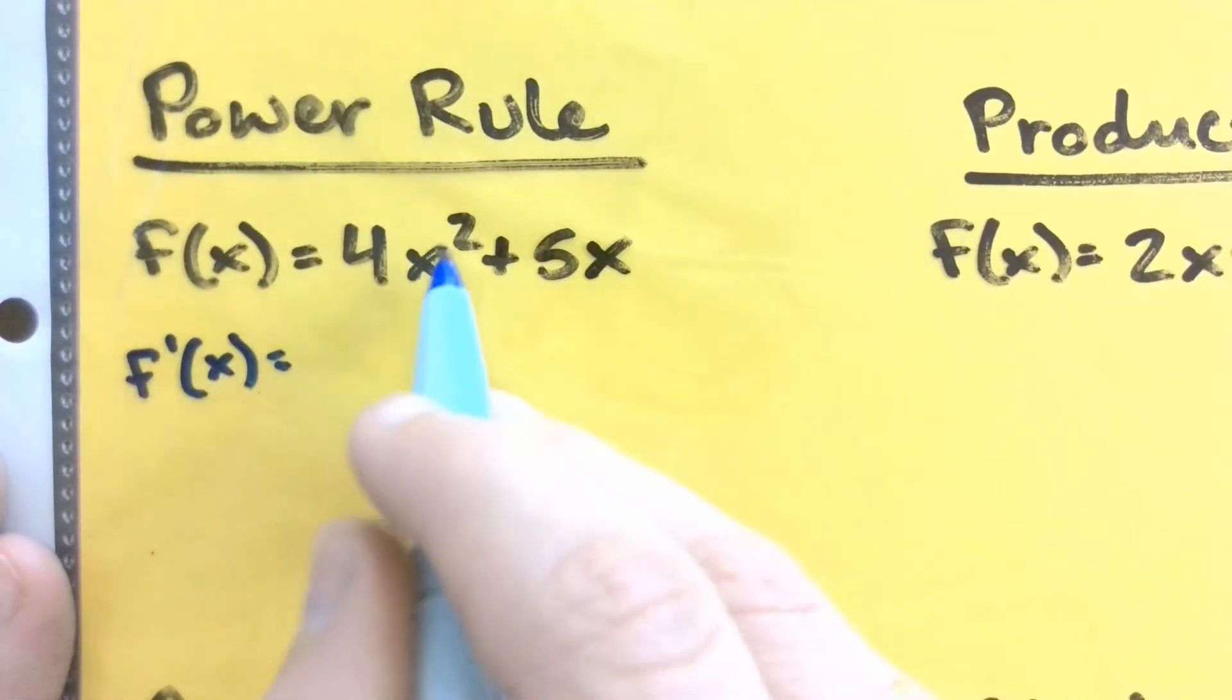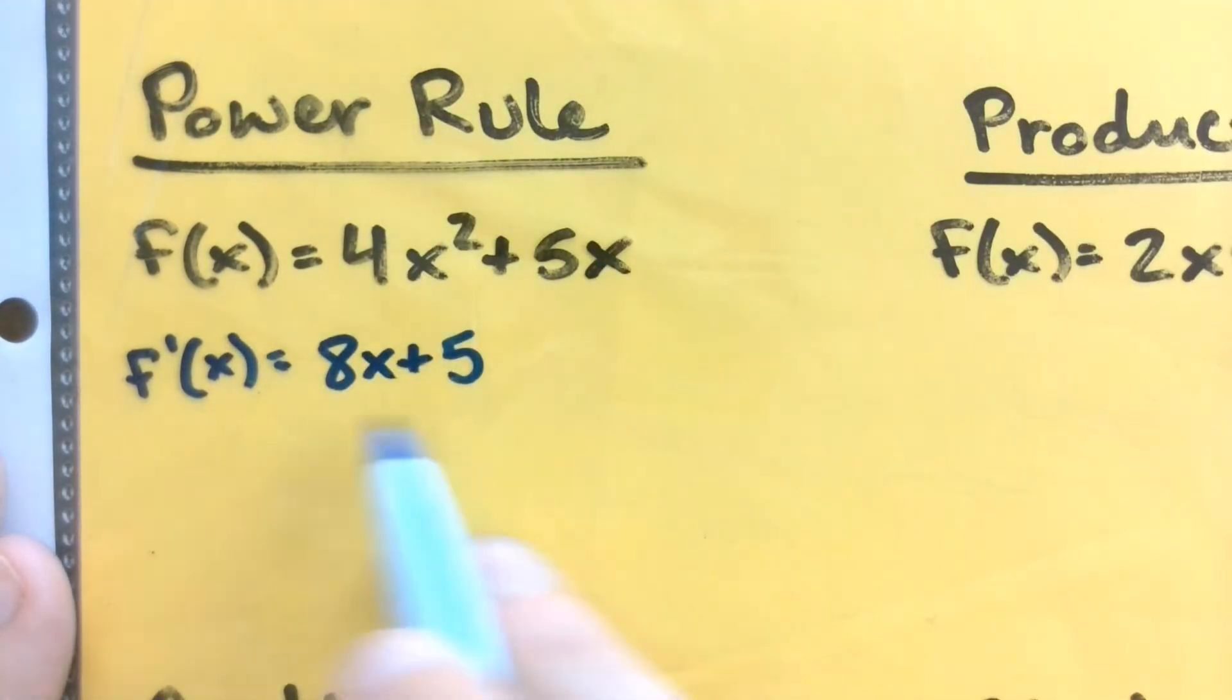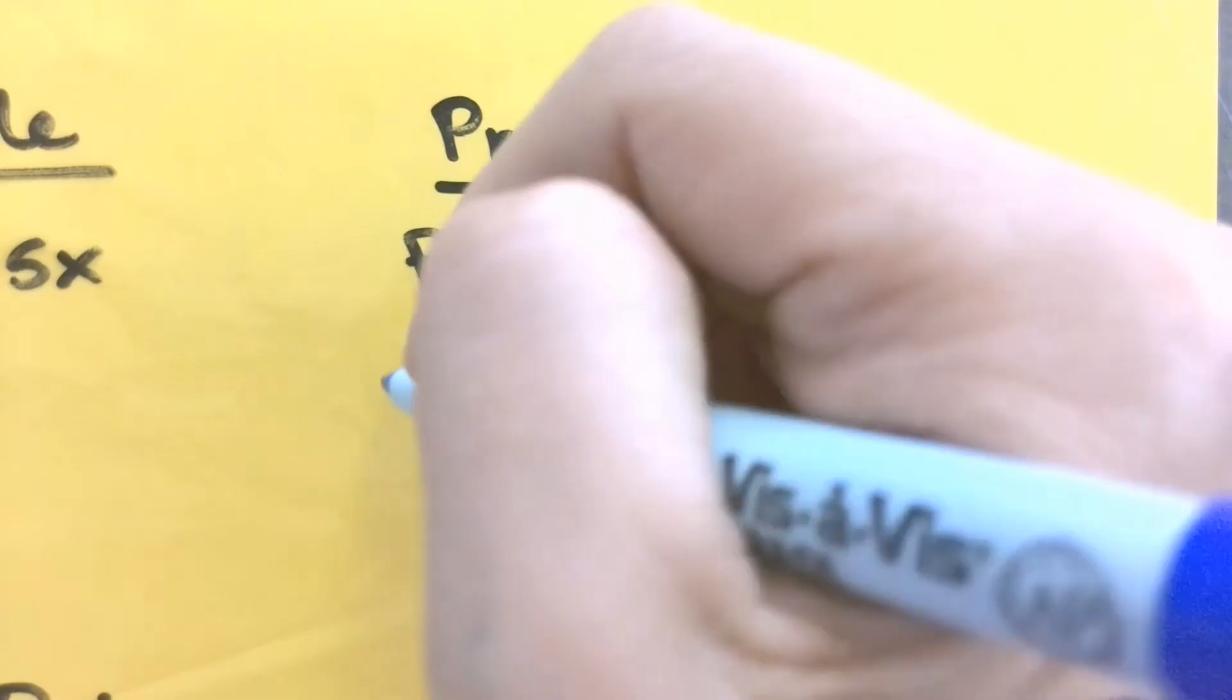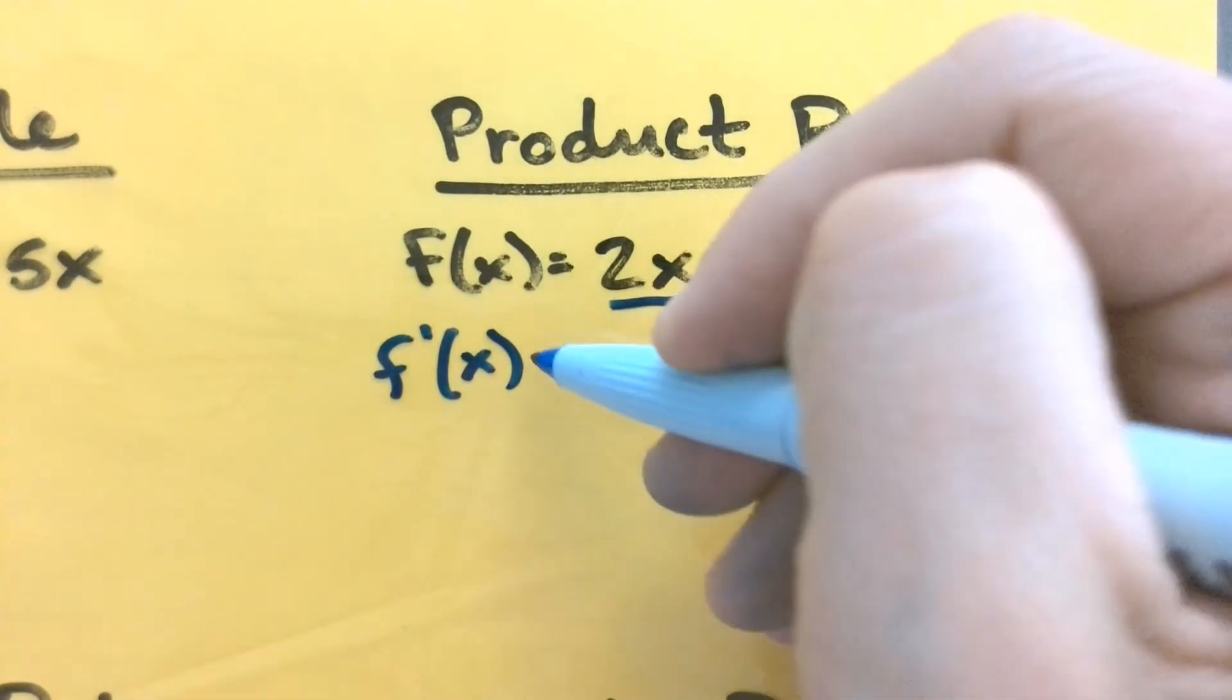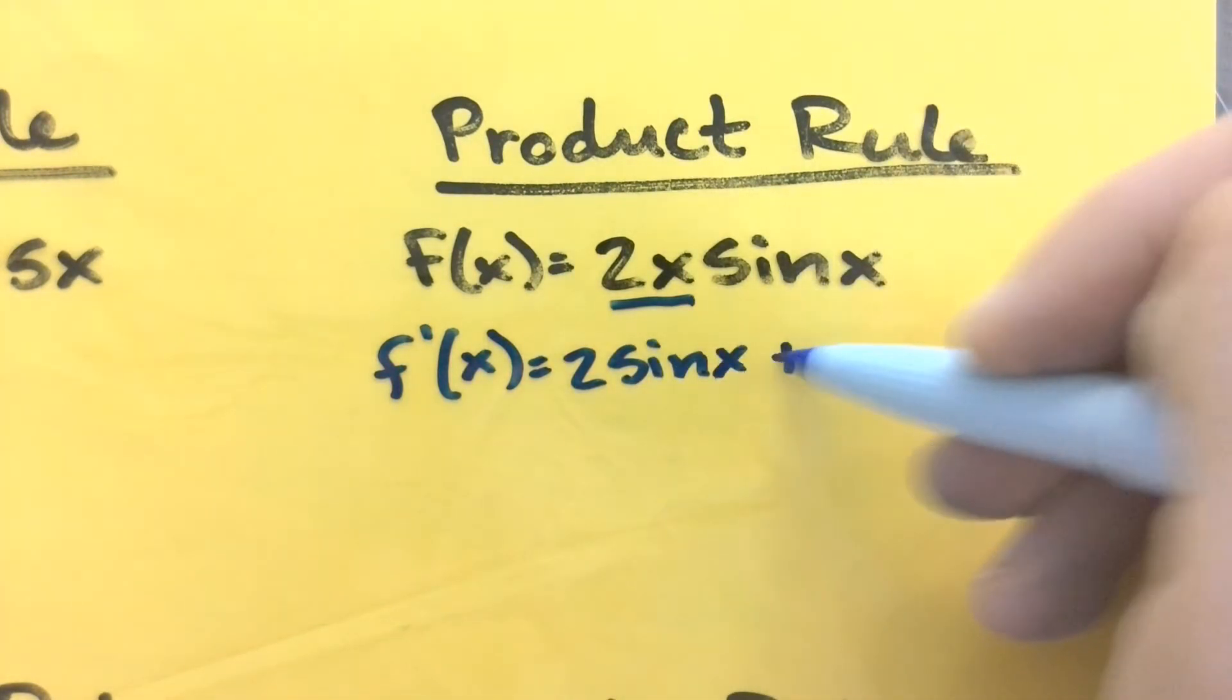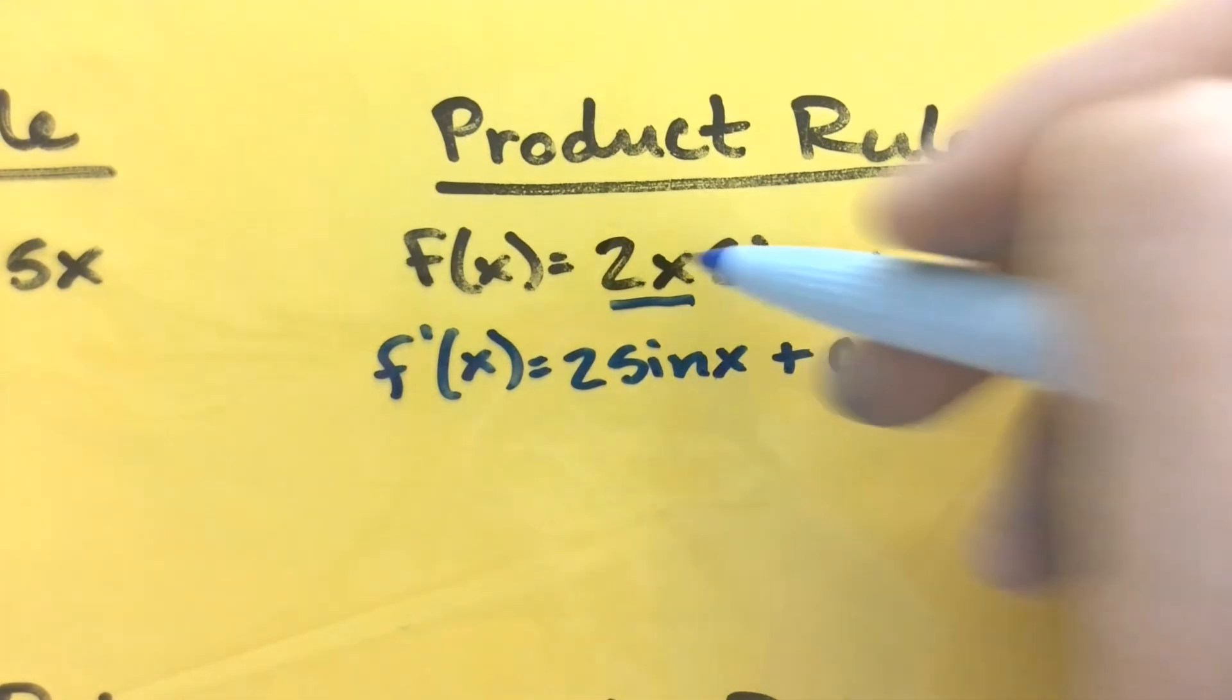So our power rule for finding derivative, multiplying that exponent by the coefficient, knocking it down to power, so you'd have 8x plus 5. The product rule, remember that we are taking the derivative of the first equation times the second plus the derivative of the second times the first.